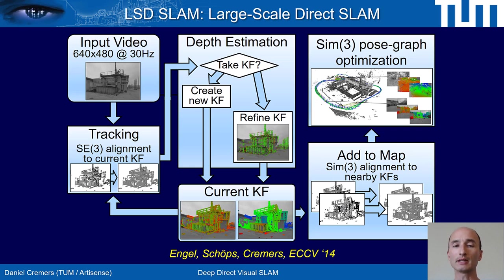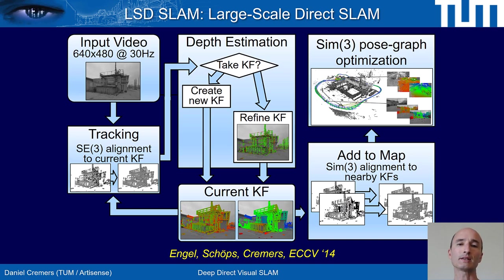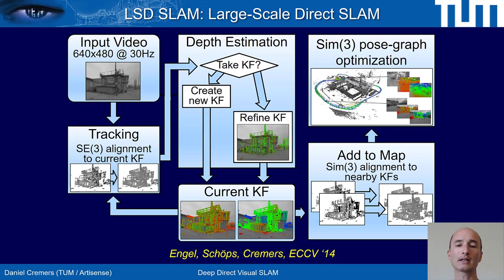One of the first direct SLAM methods, and to my knowledge the first large-scale capable direct SLAM approach, is a technique called LSD SLAM. This was predominantly developed by Jacob Engel. The approach has two threads running in parallel on the CPU: one tracks camera motion and the other estimates depths for a selected set of keyframes. These keyframe depth maps are then fused into a world coordinate point cloud. What makes it large-scale is the pose graph optimization adopted from LiDAR-based SLAM techniques, creating a trajectory consistent with pairwise alignments of keyframes.